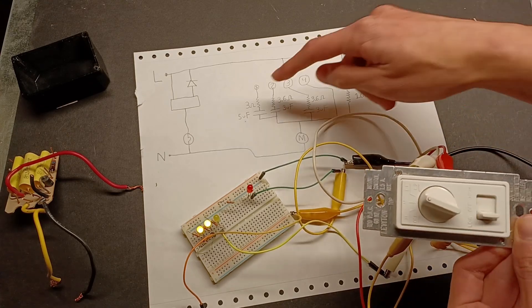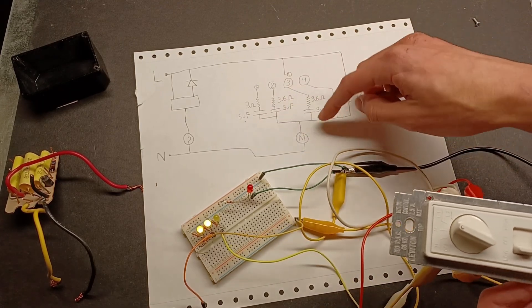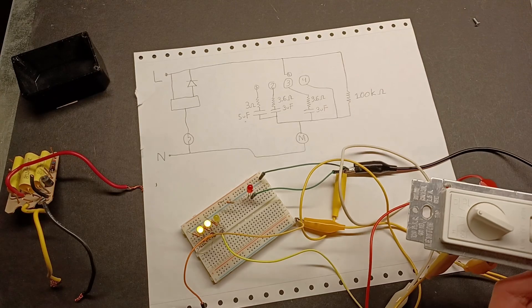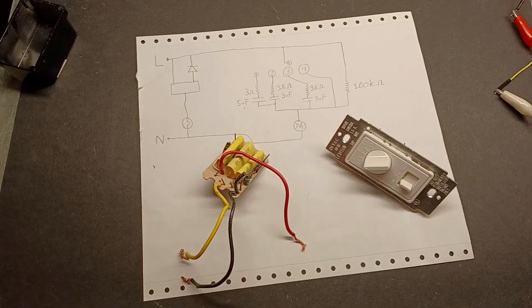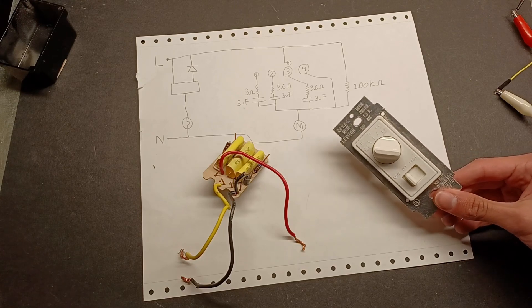So what this switch is doing is connecting more of these capacitors and resistors in parallel to allow more power to go through the fan. But anyways, this was inside of a ceiling fan speed controller switch.